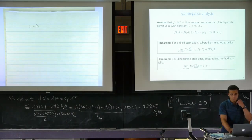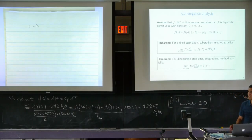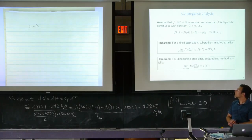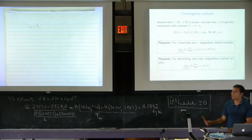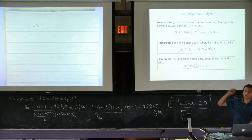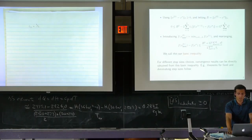If we take step sizes that are diminishing in the sense that their squares are summable but they're not summable themselves—like the choice t_k = 1/k—then we actually get a solution in the limit. You'll prove that on the homework.